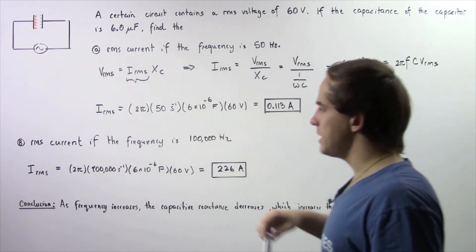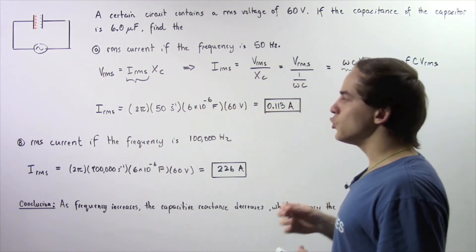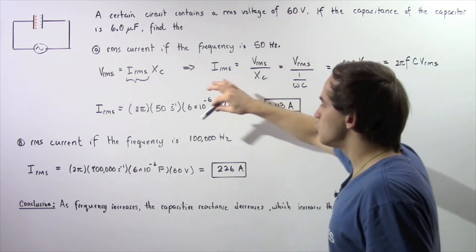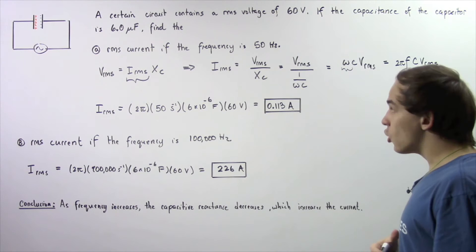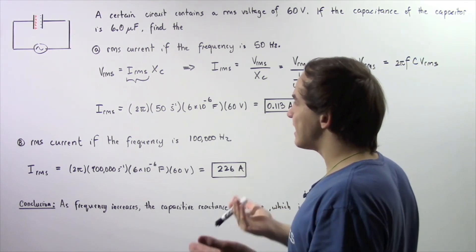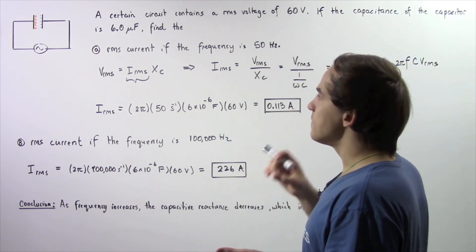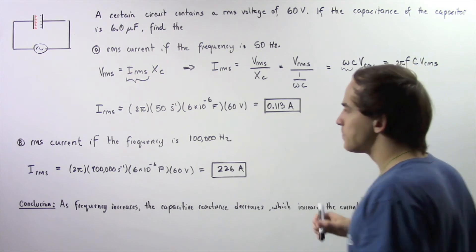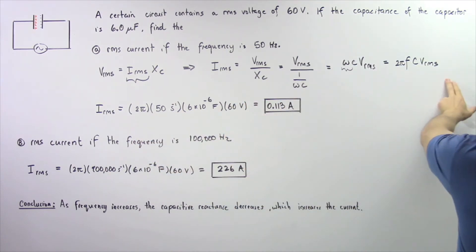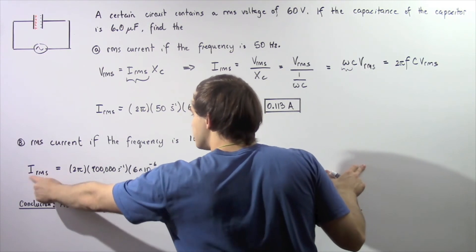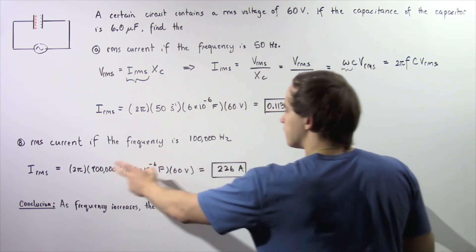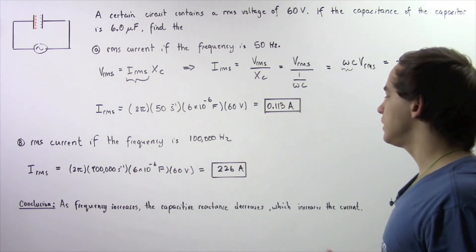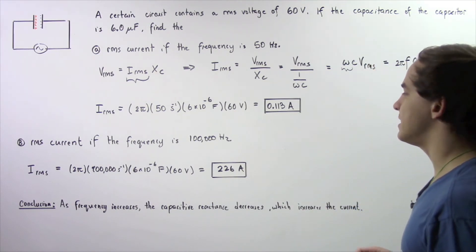Now let's move on to part B. We want to calculate the root mean square current if we increase our frequency from 50 Hz to 100,000 Hz. When we increase our frequency, we essentially decrease our reactance, and that will increase our current, as we'll see in just a moment. Applying the same equation, the root mean square current equals 2π times the frequency times the capacitance times the root mean square voltage, giving us approximately 226 amps.